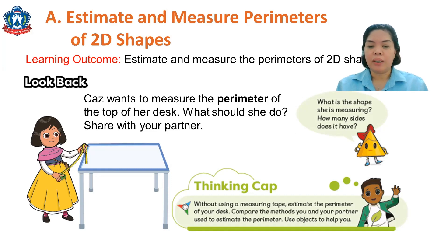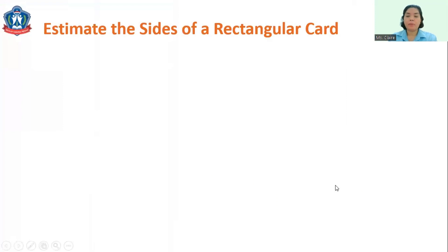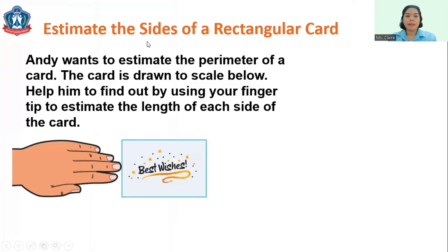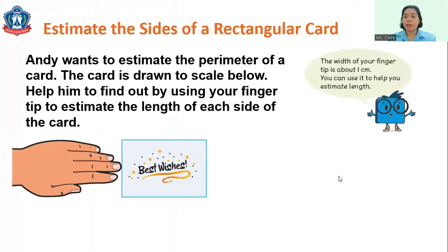Now let's look at a problem: estimating the sides of a rectangular card. He wants to estimate the perimeter of a card that is drawn to scale. Help him find out by using your fingertip to estimate the length of each side. You can try using your fingernail — when we estimate, we don't use a ruler. The width of your fingertip is about 1 cm.